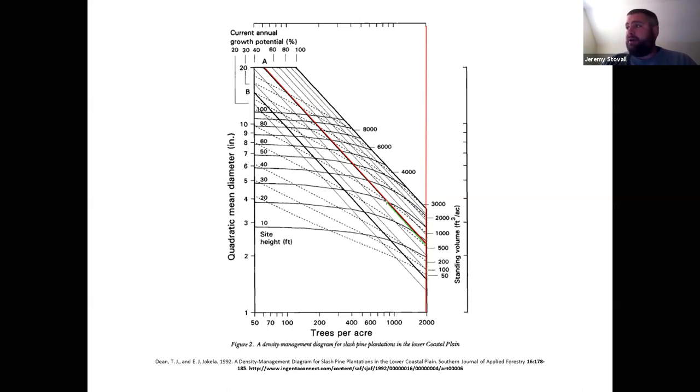Now you can see I'm very casually ballparking my QMDs and my trees per acre right now as I try to teach you this. But keep in mind, you do not want to do that when you're drawing this diagram out. You want a ruler, you want to draw this out, and you want to be very precise with this.